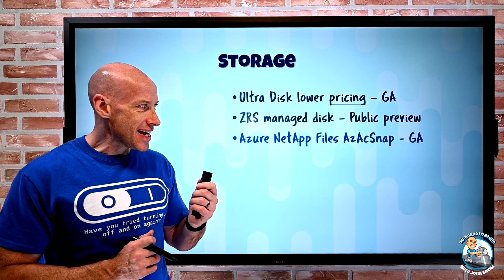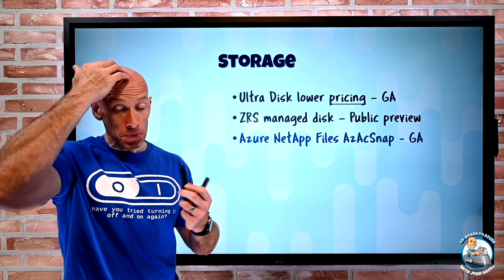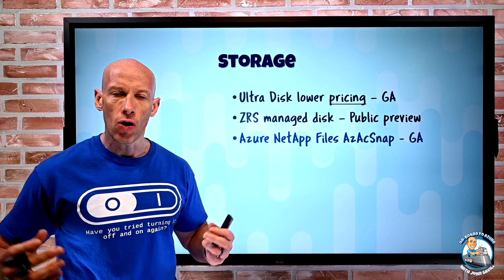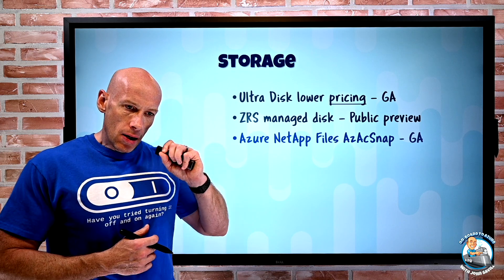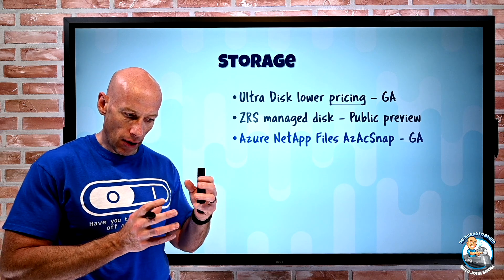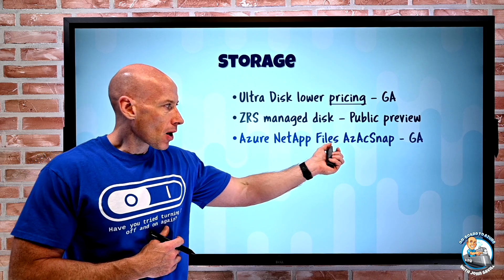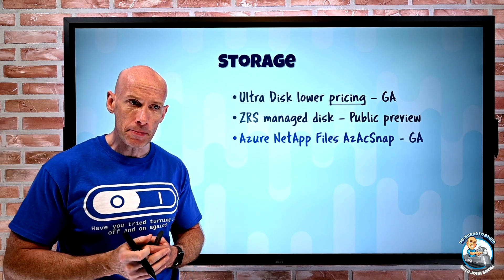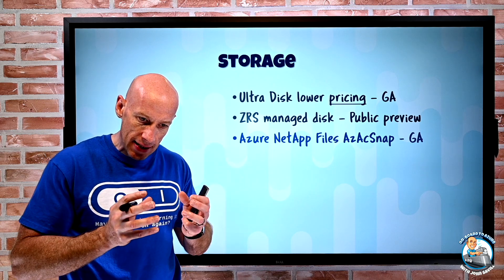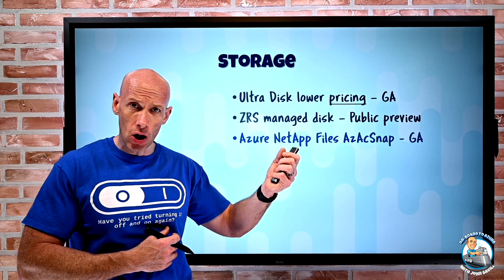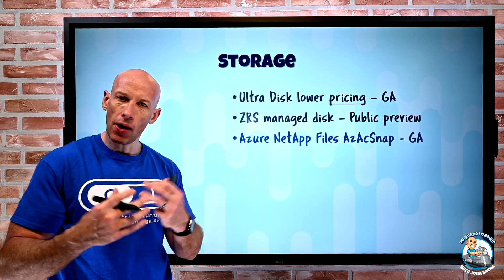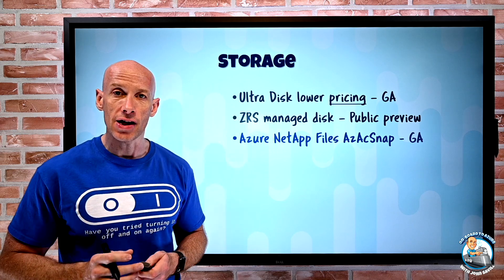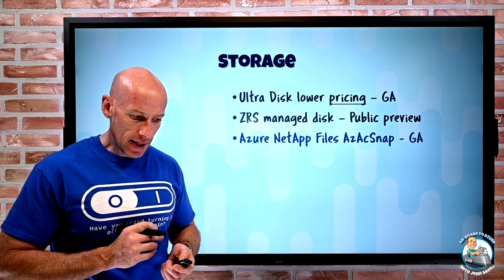Azure NetApp Files AzAcSnap has gone GA. Azure NetApp Files is the first-party Azure service using NetApp storage solutions in Azure data centers, providing high-performance NFS and SMB options. For SAP HANA workloads running inside a virtual machine, AzAcSnap can run as a cron job either inside that VM or on anything with a network connection to it. It gets the database into a backup-consistent, app-consistent state, talks to Azure NetApp Files to do a snapshot, and then releases the application to carry on. So it does that complete orchestration for app-consistent backups on Azure NetApp Files, currently for SAP HANA in SUSE and RHEL environments.